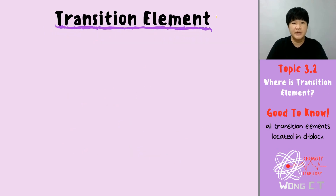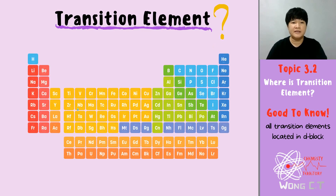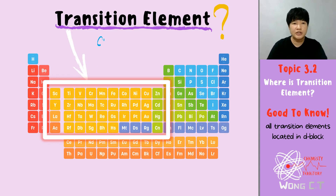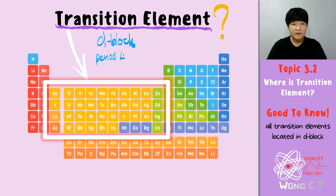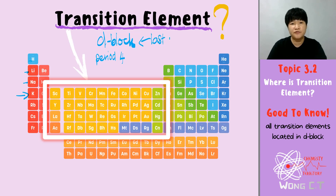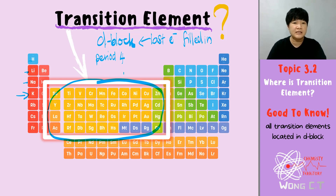The question will definitely be: what is a transition element and where is the transition element in the periodic table? In the periodic table, your transition element is located in the d-block. All the elements in this d-block are what we call transition elements, and the d-block will only start at period 4. The d-block means the last electron that you fill in is in the d orbital, so all elements here have their last electron filled into a d orbital.